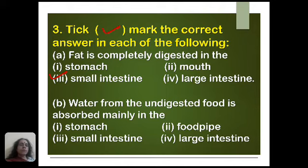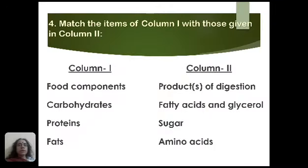The second MCQ question is: water from the undigested food is absorbed mainly in the — stomach, food pipe, small intestine, or large intestine. Water is absorbed in the large intestine, so we tick the fourth option, large intestine.